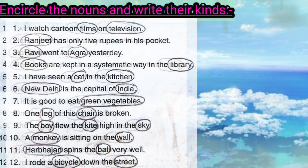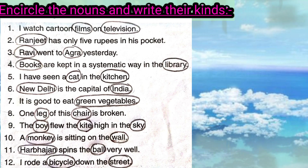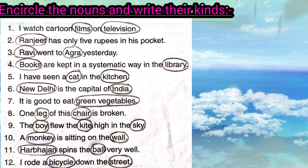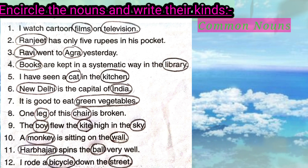Let us start our next exercise: encircle the nouns and write their kinds. First one: 'I watch cartoon films on television.' Here, both film and television are common nouns, as we don't have the particular name of the film or the television.